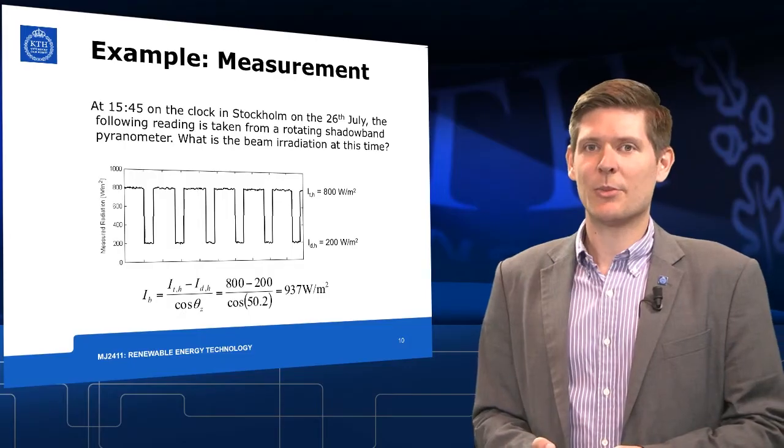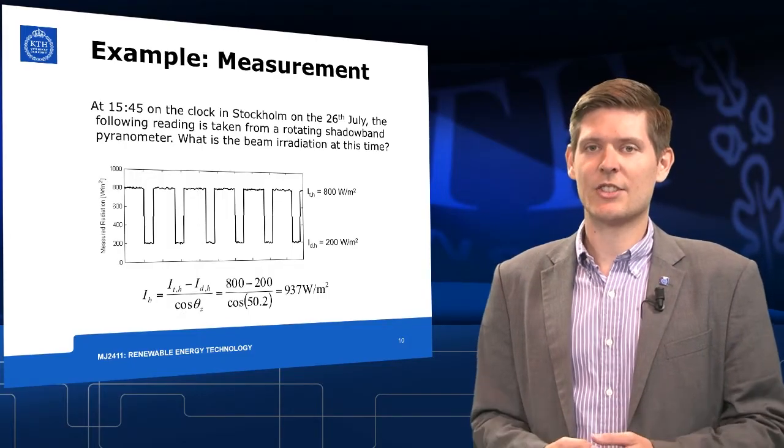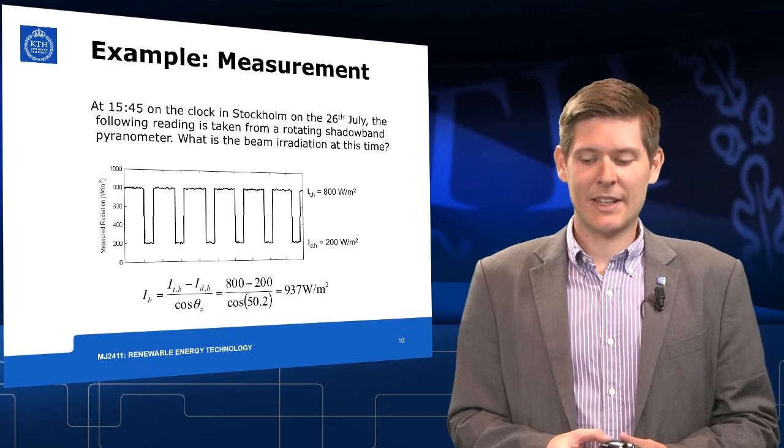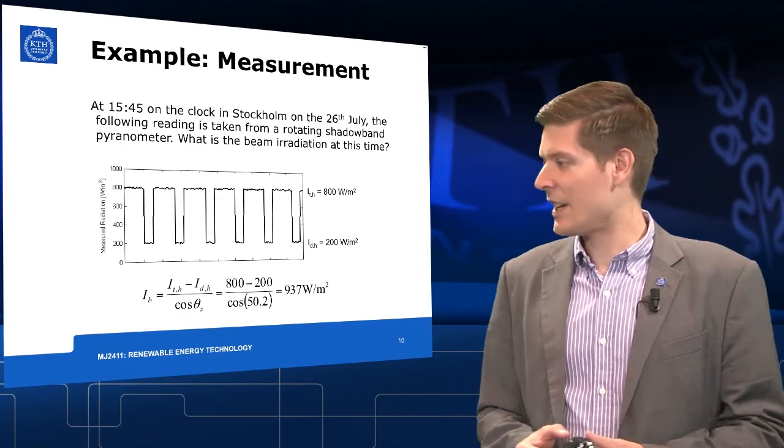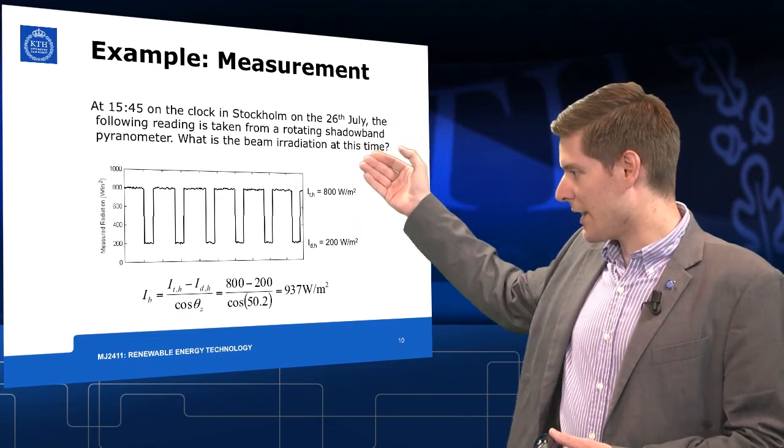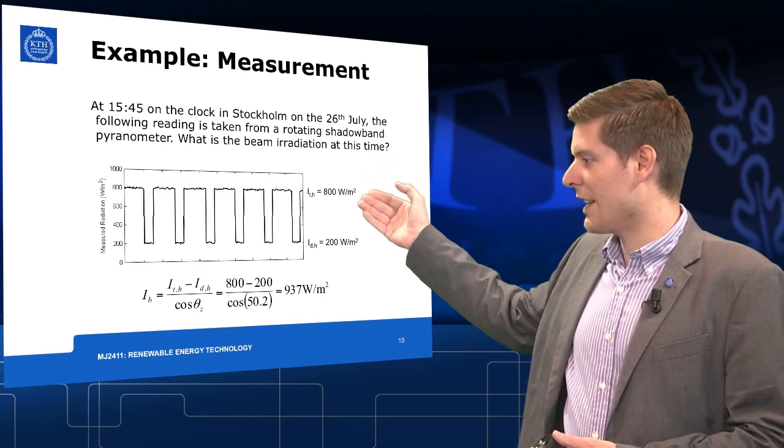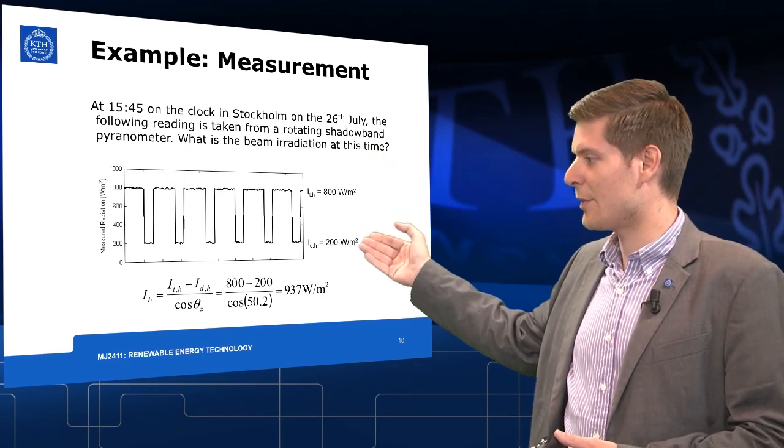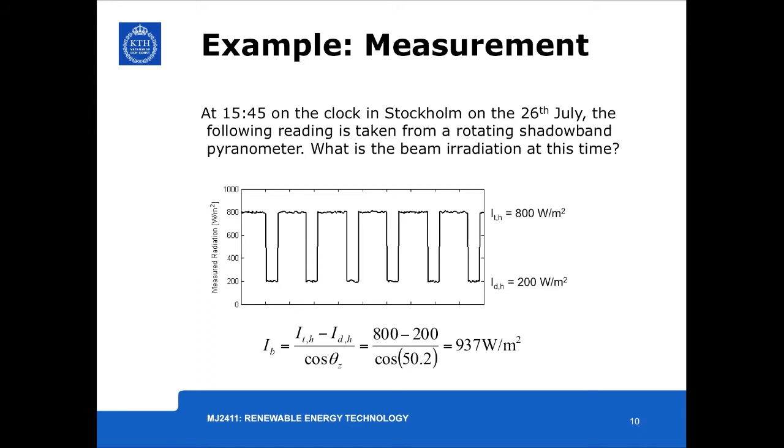In the measurements of the pyranometer, of the rotating shadow band pyranometer, we can see that the total radiation is about 800 watts per square meter, and the diffuse radiation down here is about 200 watts per square meter. Knowing these two values and the senate angle, using the equation shown before, we can calculate the beam radiation to be 937 watts per square meter.